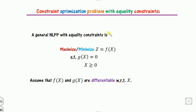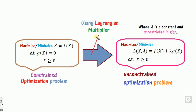In the constraint optimization problem, the constraints must be of equality sign in order to apply this Lagrange multiplier method. The purpose of the Lagrange multiplier is to convert the constrained optimization problem into an unconstrained optimization problem using the Lagrangian function L, where f(x) is the objective function, g(x) is the constraint, and lambda is the Lagrange multiplier, which is unrestricted in sign — so you can use either plus or minus as per your convenience.